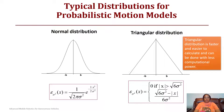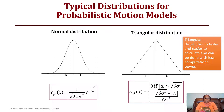Here are typical probabilistic motion models we can use. The first is a normal distribution, also called a Gaussian distribution: one over the square root of two pi sigma squared, times e to the negative x squared over two sigma squared. We can also approximate a normal distribution with a triangular distribution, which requires less computational power. The triangular distribution returns zero if the magnitude of x is greater than the square root of six sigma squared; otherwise it returns the square root of six sigma squared minus the absolute value of x, over six sigma squared.